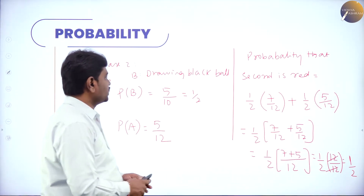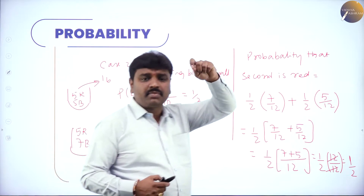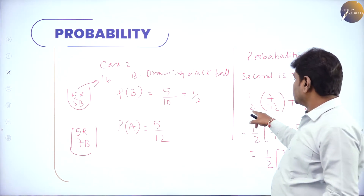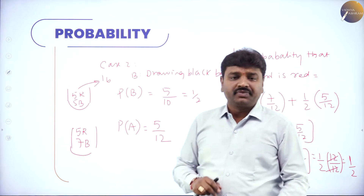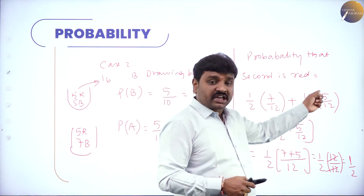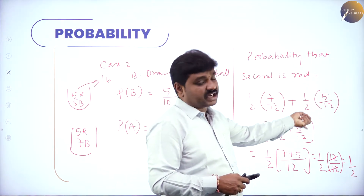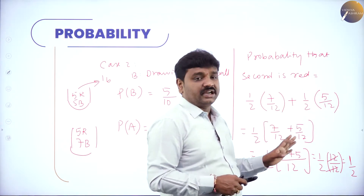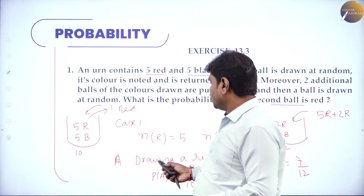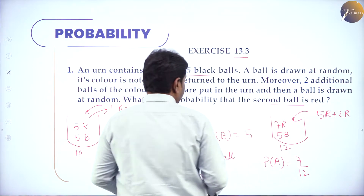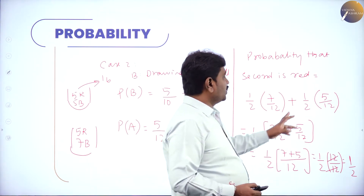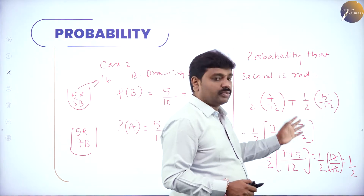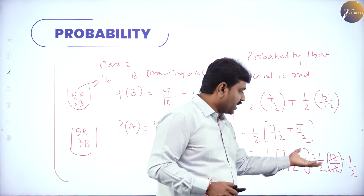What you should understand: probability of drawing the second ball red considers two paths — first ball also red and second ball red; or first ball black and second ball red. In the first case, probability of second ball red is 1/2 × 7/12. In the second case, it is 1/2 × 5/12. Add both cases to get the answer.